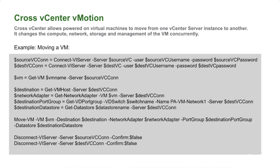Another big update to the core commandlets is the upgrade to MoveVM. As of vSphere 6.0, a feature was released where you can move VMs between vCenters. At the time of release, it could only be done by the UI, and then later by the API. But with this latest version of PowerCLI 6.5, we can now do that with the MoveVM commandlet. Here we have an example. One key thing to note is that everything in the environment when doing these migrations has to be at least at level 6.0 — this includes your vCenter, your hosts, and even your distributed switches.